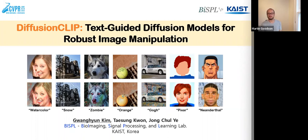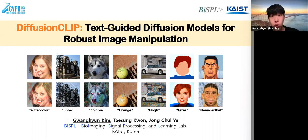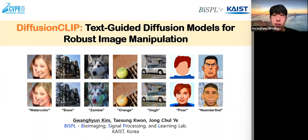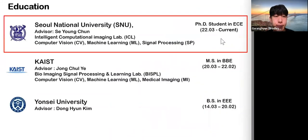Thank you. Hi guys, good evening. I'm Guan Yun Kim from Seoul National University, and I'm going to present our work Diffusion Clip: Text-Guided Diffusion Models for Robust Image Manipulation, which was accepted to CVPR this year. Before diving into the main contents, I'll briefly introduce myself. I am now a first-year PhD student in electrical and computer engineering at Seoul National University, advised by Professor Se-young Chon.